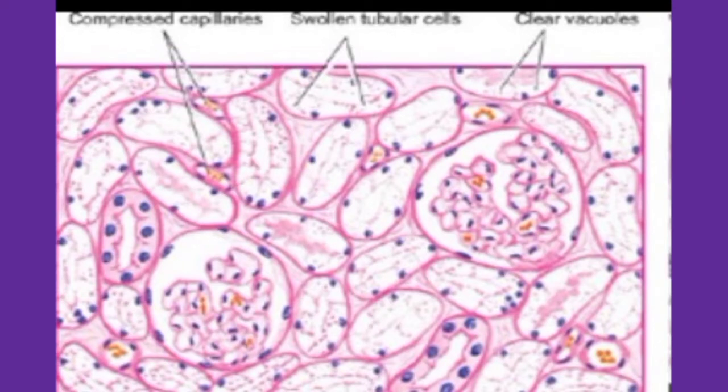This is the image of hydropic change in the kidney cells — this image is taken from Harsh Mohan. You can see that the tubular cells are swollen and there is clear vacuole formation in the cytoplasm. Also notice in the interstitial space between the cells — the micro-capillaries are compressed and flattened.